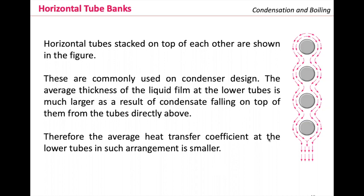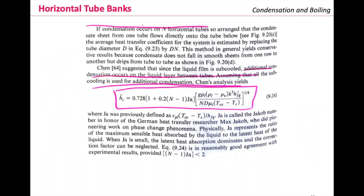We are going to see how it impacts the heat transfer coefficient. The condensate is falling from the top of the tubes, so you expect a much larger condensate film at the lower tubes, and that will impact the average heat transfer coefficient. You have this equation in your textbook for condensation occurring in n horizontal tubes.